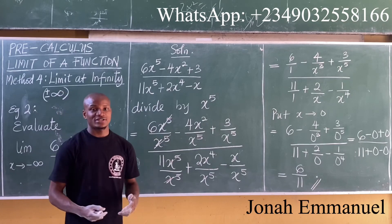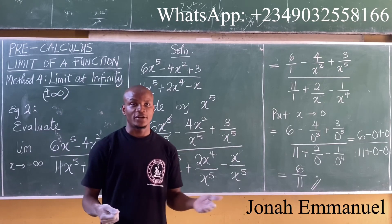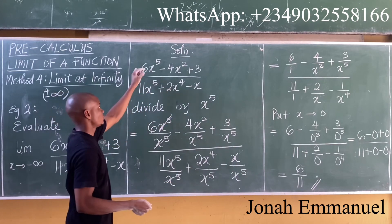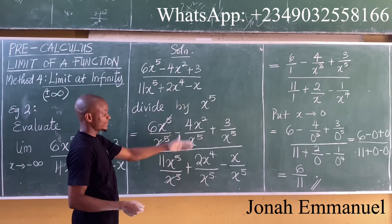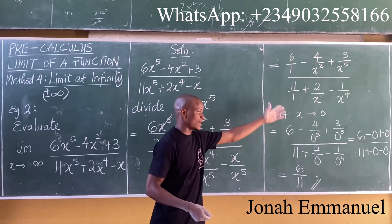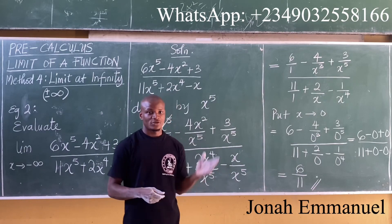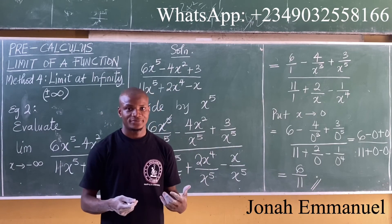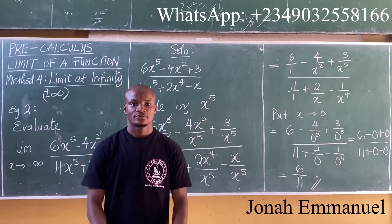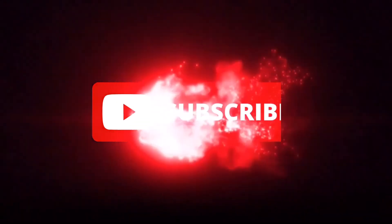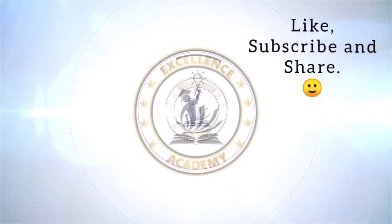This is a simple concept of evaluating limits involving infinity. Divide by the highest power of x, then substitute x as 0 and simplify — you have your answer. This is how you solve this type of question.